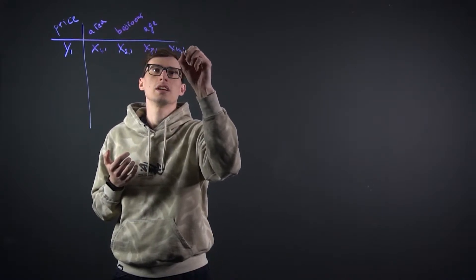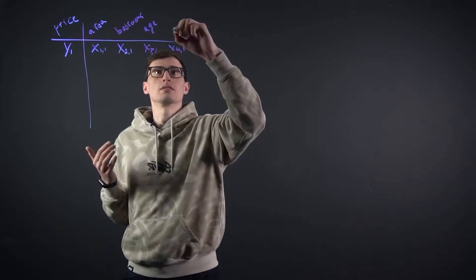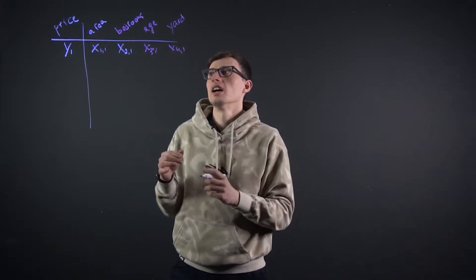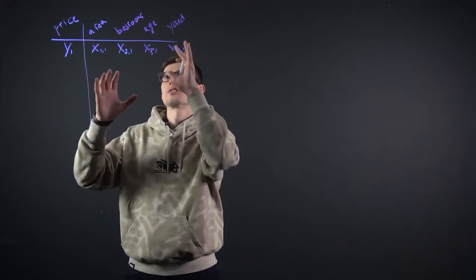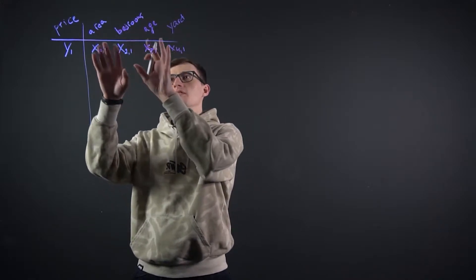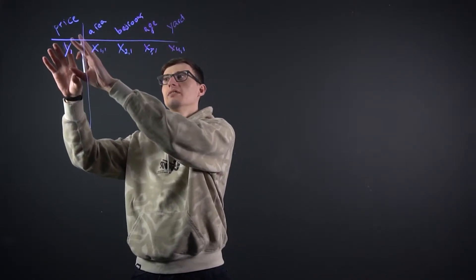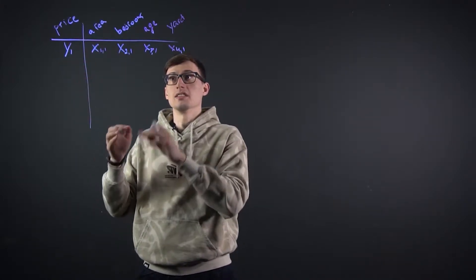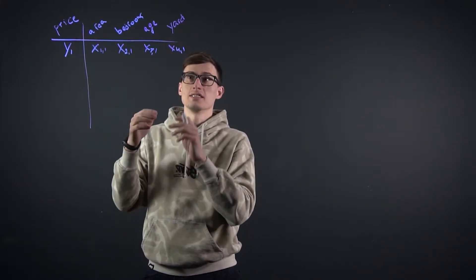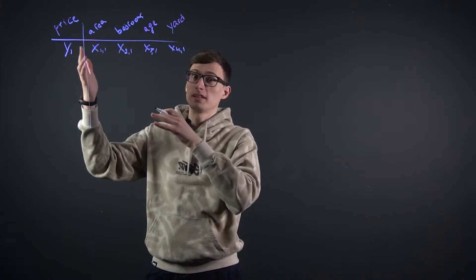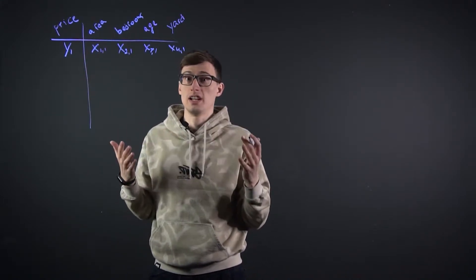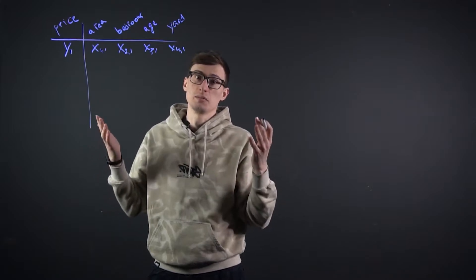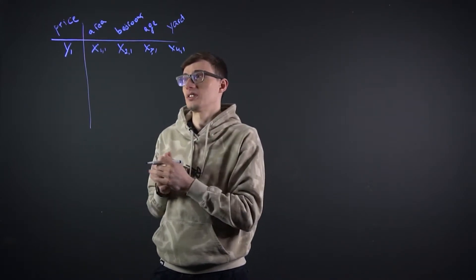And the fourth one, x4, let's say the area of the yard. Obviously there are many more factors, but these are the ones that we can quantify. There's some combination where each of these variables has an effect on the final price. Obviously the bigger the house, the more expensive it is; the more bedrooms, the more expensive; the newer the more expensive — but not always, because Victorian houses are pretty cool. And obviously the bigger the yard, the more expensive the house will be.